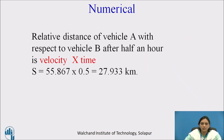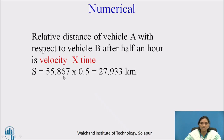In the same question, find the relative distance of vehicle A with respect to B after half an hour. Distance equals velocity multiplied by time. We have calculated the relative velocity as 55.867 kilometers per hour, and time is given as half an hour. So the relative distance of A with respect to B is 27.933 kilometers.